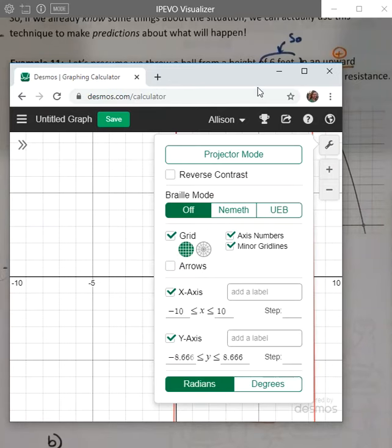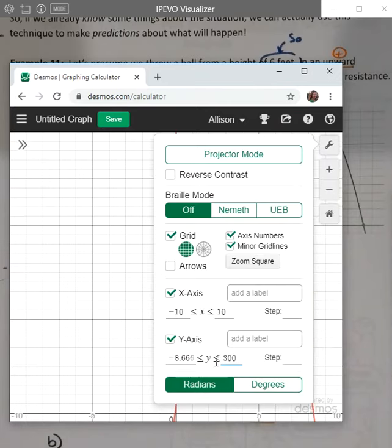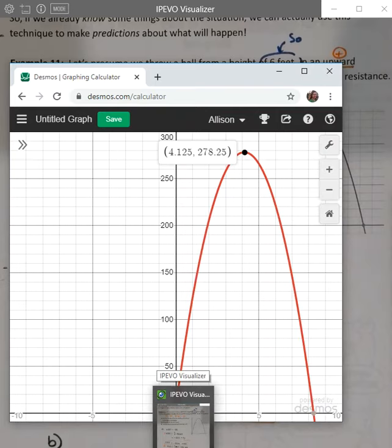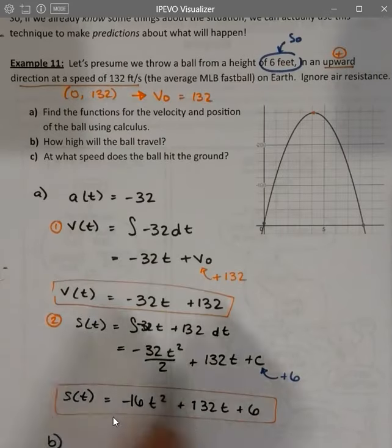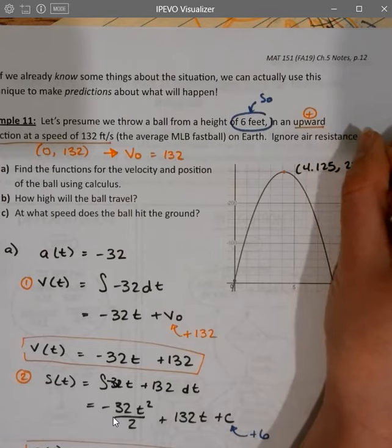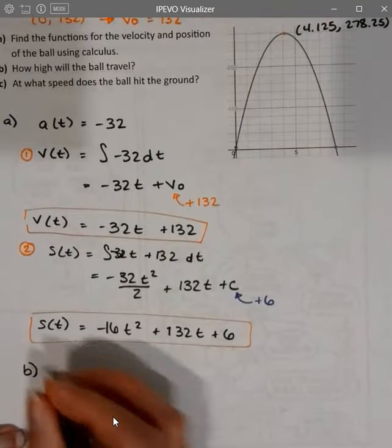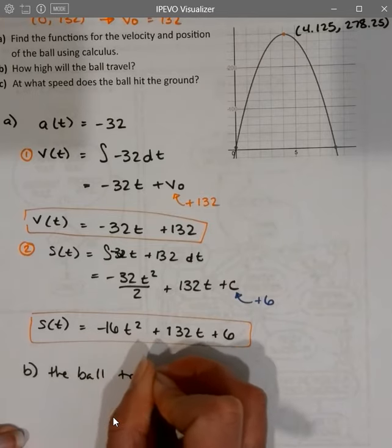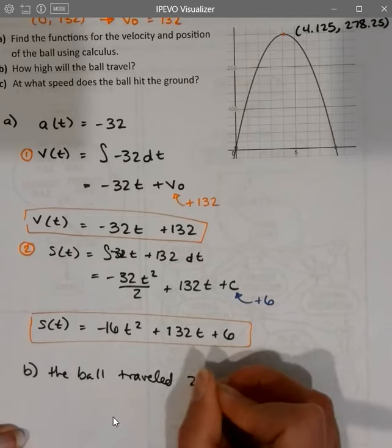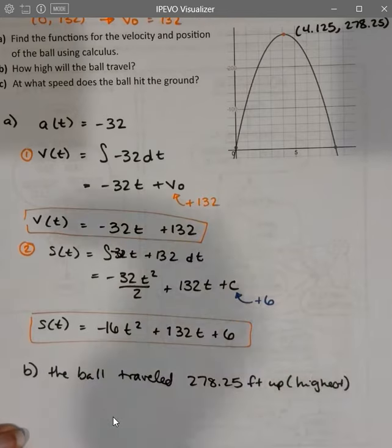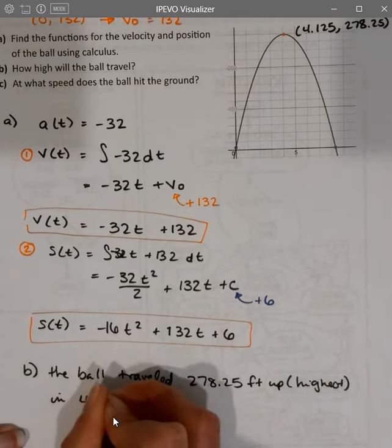And then I'm going to change my scaling by a lot to be able to see the top here. Looks like on the picture that was in notes, we're going to be bigger than 200, so let's go for a y max of 300 up here. That's pretty good. And so how high did it go? It went 278 feet up in 4.125 seconds. So we just found the vertex. So if I just label this point up here, it was 4.125 comma 278.25. And so my answer for part B is the ball traveled 278.25 feet up highest in 4.125 seconds.